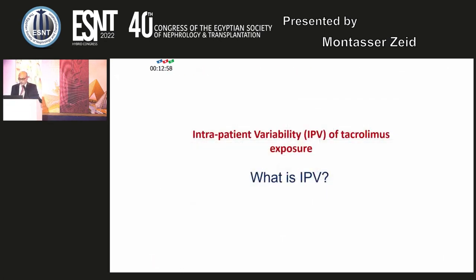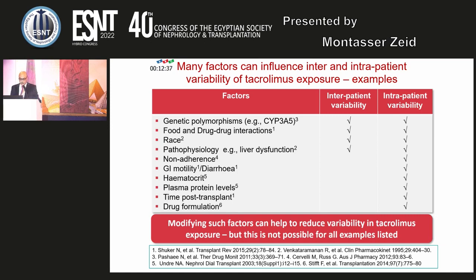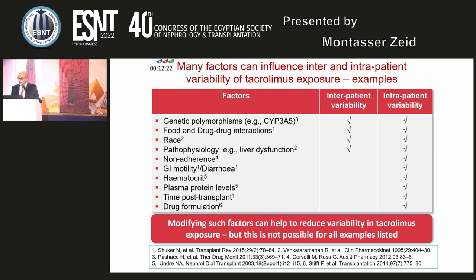Regarding intrapatient variability of tacrolimus exposure, we first have to understand what intrapatient variability is. Many factors can influence inter- and intrapatient variability of tacrolimus exposure, including genetic polymorphism, food and drug-drug interactions, race, pathophysiology, non-adherence, gastrointestinal motility and diarrhea, hematocrit, plasma protein level, time post-transplant, and drug formulation. Modifying such factors can help to reduce variability, but this is not possible for all examples listed.